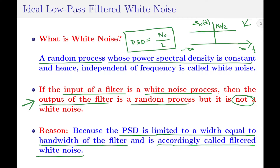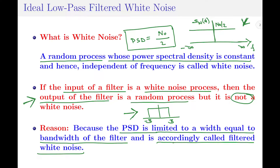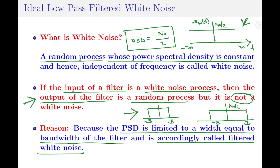For example, if I take a simple low pass filter with bandwidth varying from minus B to plus B and pass white noise through it, then the output signal will be a random signal with power spectral density equal to N₀/2, but this PSD is now limited between minus B to plus B, which equals the bandwidth of the filter. Therefore, this noise process is called filtered noise and not actual white noise itself.